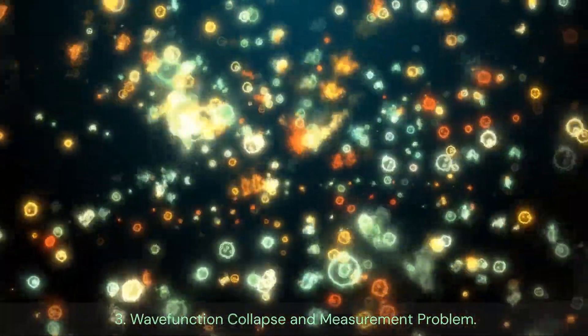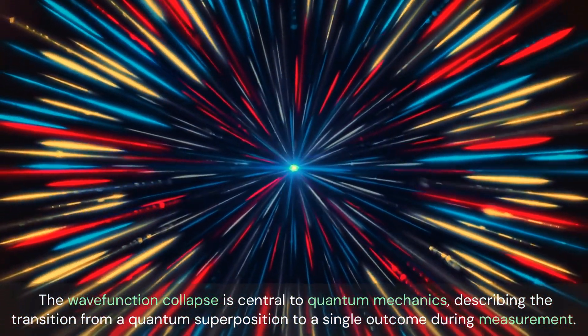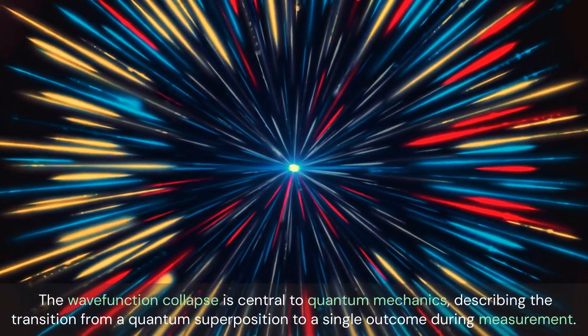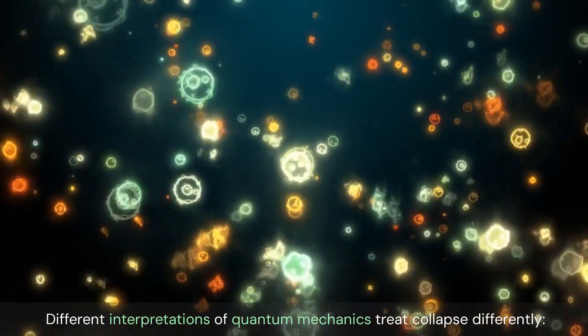Wave function collapse and measurement problem. The wave function collapse is central to quantum mechanics, describing the transition from a quantum superposition to a single outcome during measurement. Different interpretations of quantum mechanics treat collapse differently.